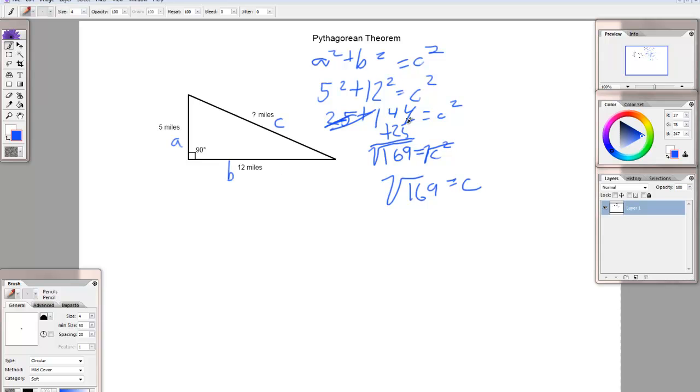We just saw that 12 squared was 144, and 169 is a little bit bigger than 144. So, let's try 13. Let's try to see if 13 is the square root of 169. And the way you do that is, you square it.